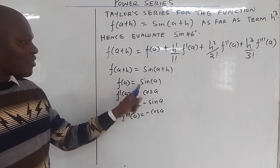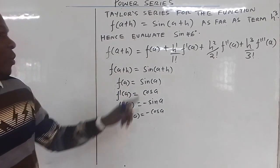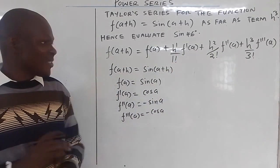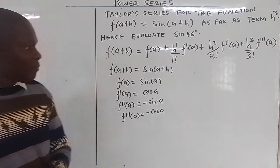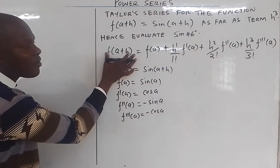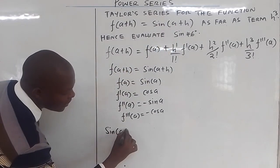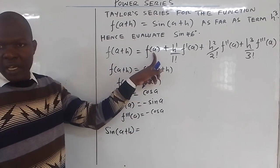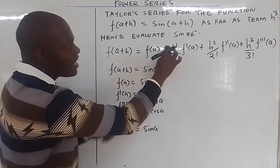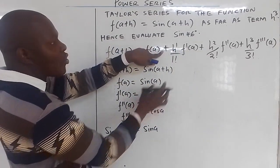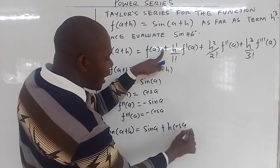So we found the values of f(a) = sin(a), f'(a) = cos(a), f''(a) = -sin(a), and f'''(a) = -cos(a). Now we substitute these values into the expansion. Where there is f(a+h) we put sin(a+h), equals f(a) which is sin(a), then plus f'(a) which is cos(a) times h.